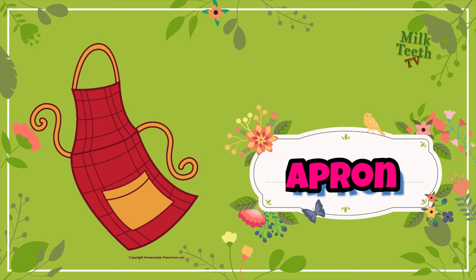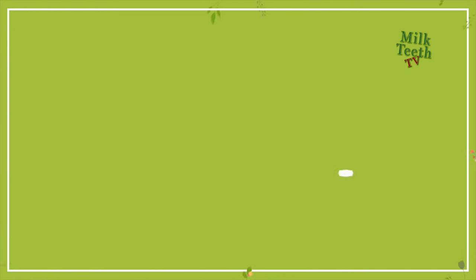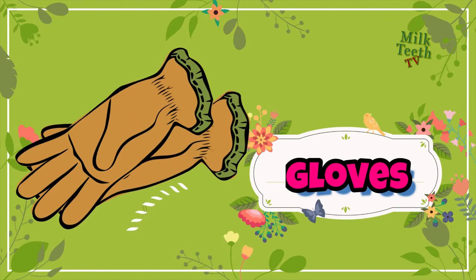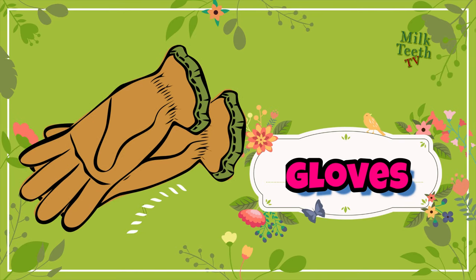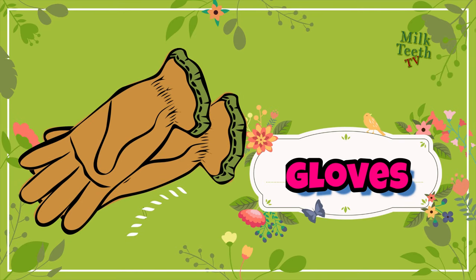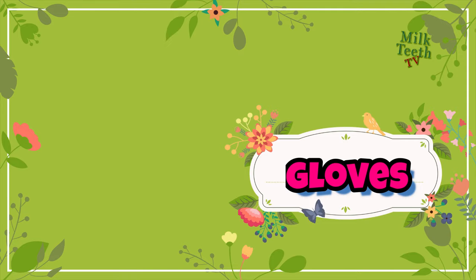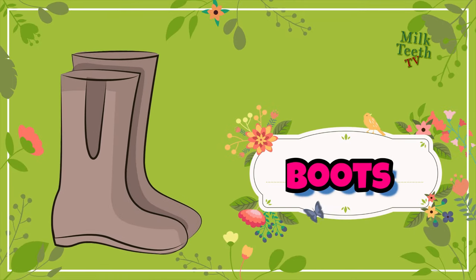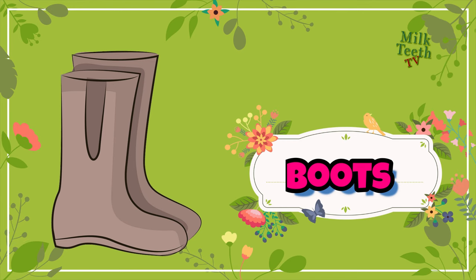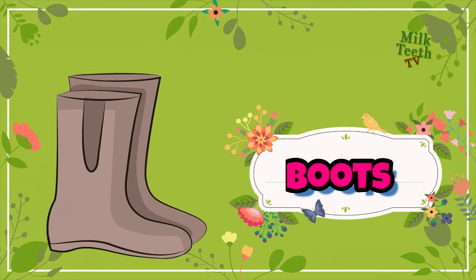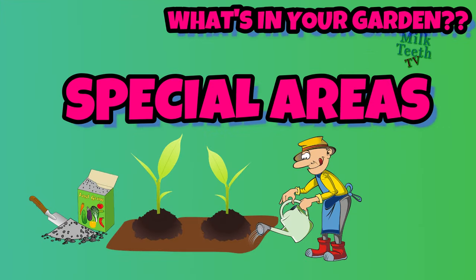Safety gear. Apron — a piece of clothing worn over the front of your clothes to prevent them from getting dirty, an important part during gardening. Gardening gloves — soft protective clothing worn over your hands during gardening to prevent them from getting dirty and also to protect from minor cuts, injuries, and even thorns of the plants. Gardening boots — footwear worn during gardening to prevent your feet from getting dirty and from injuries.